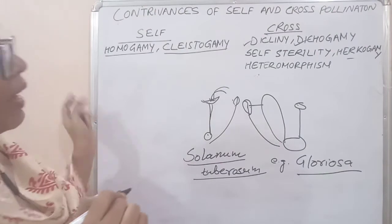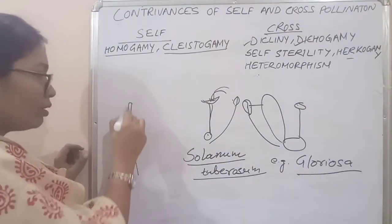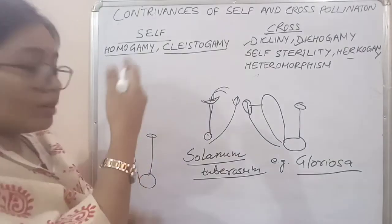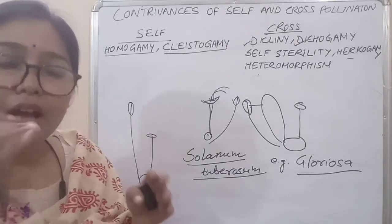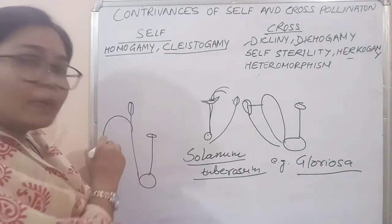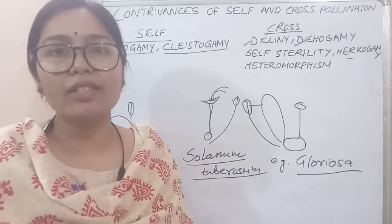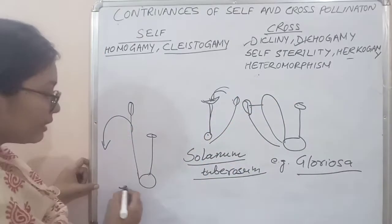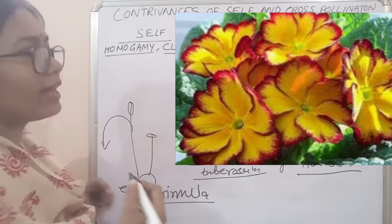And the next one is heteromorphism. Heteromorphism means the length of the anther and gynoecium are different — short gynoecium with long androecium, or long gynoecium with short androecium — making them incompatible. Pollen grains cannot reach the stigma: if they are long, they droop down outside the corolla; if short, there is no chance to reach the stigma. Heteromorphism is most common in the plant Primula.